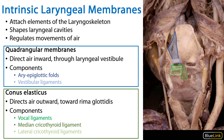We've discussed the various intrinsic membranes of the laryngoskeleton and their constituent parts, how they hold together various elements of the laryngoskeleton, and how they regulate the movement of air. This is your summary slide, and thank you for your time.